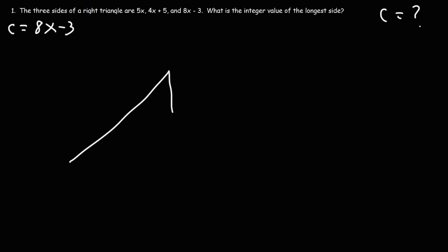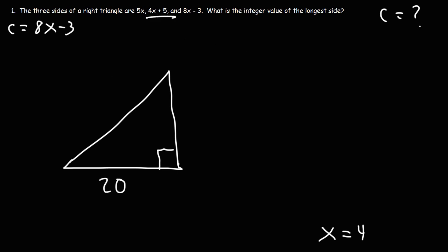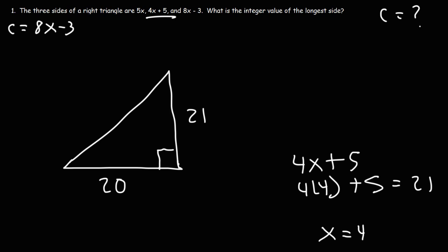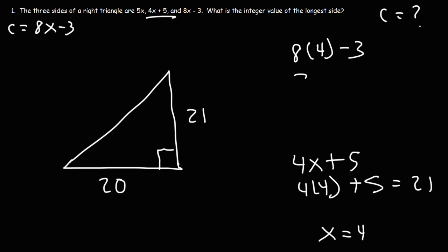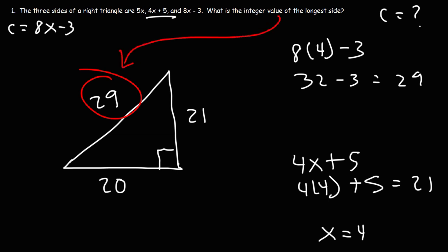Let's go back to our triangle. One side is 5x: with x equal to 4, that's 5 times 4 equals 20. The other leg is 4x plus 5: that's 4 times 4 plus 5, which is 16 plus 5 equals 21. The hypotenuse is 8x minus 3: that's 8 times 4 minus 3, which is 32 minus 3 equals 29. So we have the 20, 21, 29 right triangle. The integer value of the longest side — the hypotenuse — is 29.